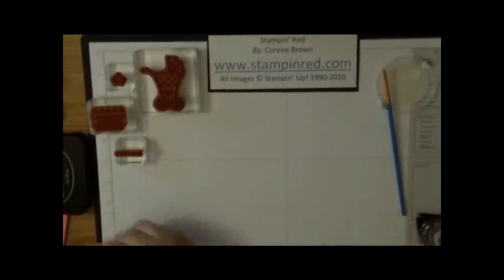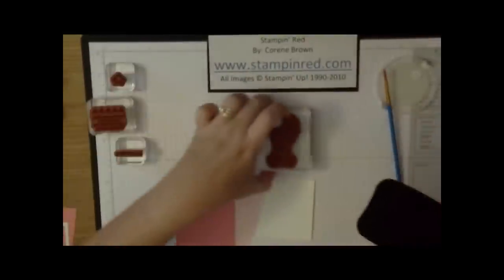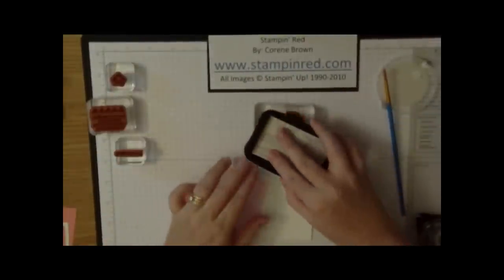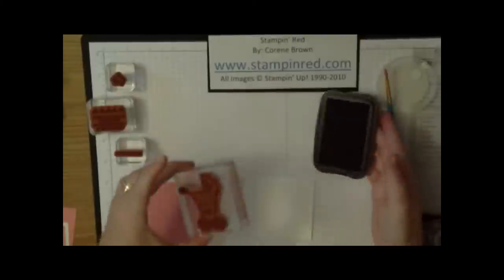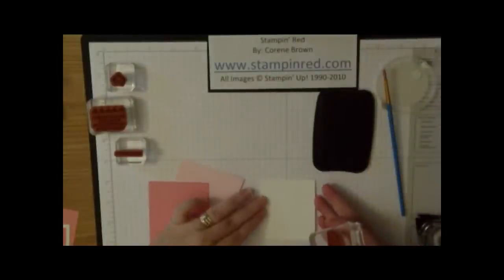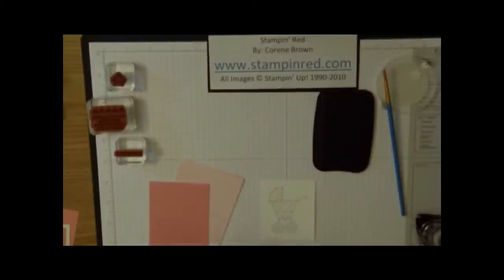Now we're going to stamp the baby carriage. Using black stays on ink, which is what I primarily use, I'm going to ink up this baby carriage and stamp that right onto the Whisper White cardstock, just like that.